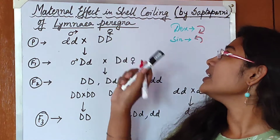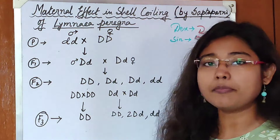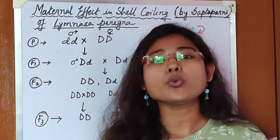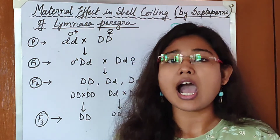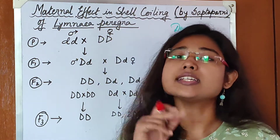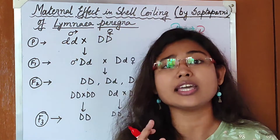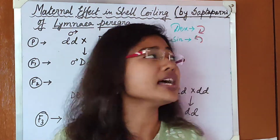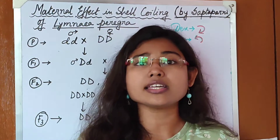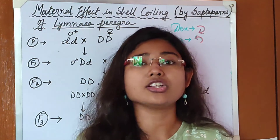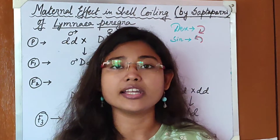What is maternal effect? Whenever you look at a shell from the top, you can find two types of coiling — either clockwise or anticlockwise. When the coiling is in the clockwise direction, that type of coiling is known as dextral coiling or right-handed coiling. When the coiling is in the anticlockwise direction, that kind of coiling is known as sinistral coiling or left-handed coiling.